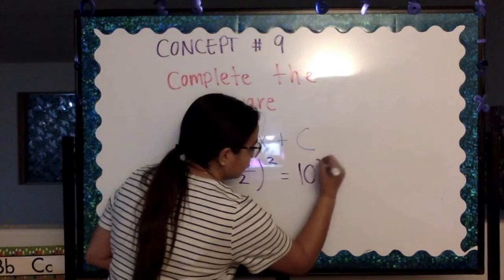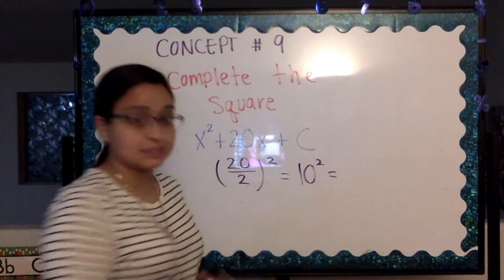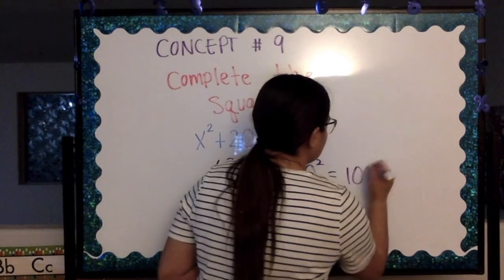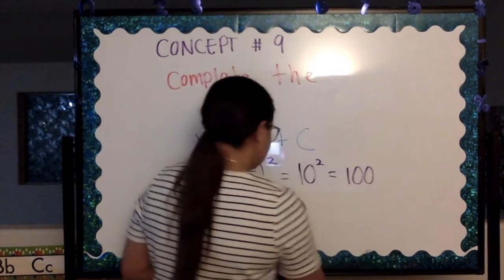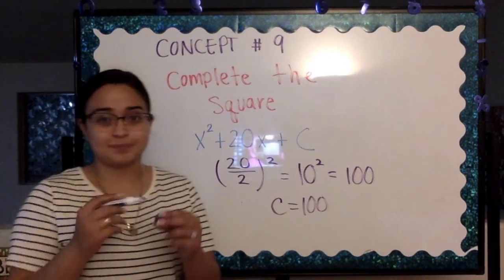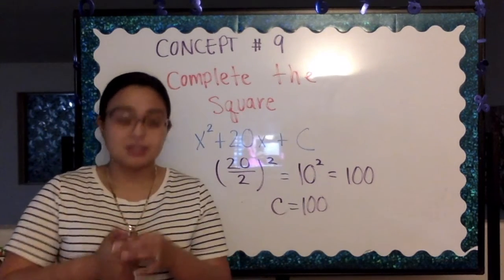And 10 squared is 10 times 10, which is the same as 100. Meaning that c is equal to 100. Simple enough.